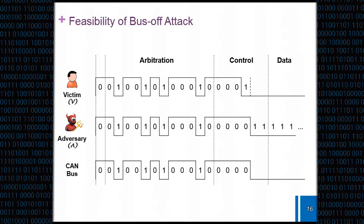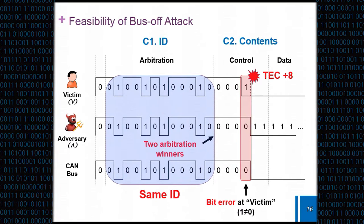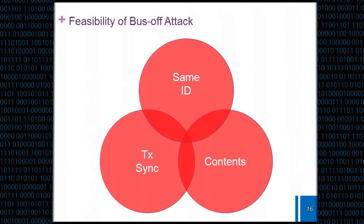There are three important things that needs to be satisfied in order to achieve this bus-off attack. First, it has to have the same ID. Also, the content should be well-crafted to have one bit that is zero whereas the victim is one and all precedence bits being equivalent. And finally, and most importantly, there should be a synchronization between the transmission timing of the victims and also the adversaries. If the attacker satisfies all three of these factors, then it can succeed in bus-off attack.